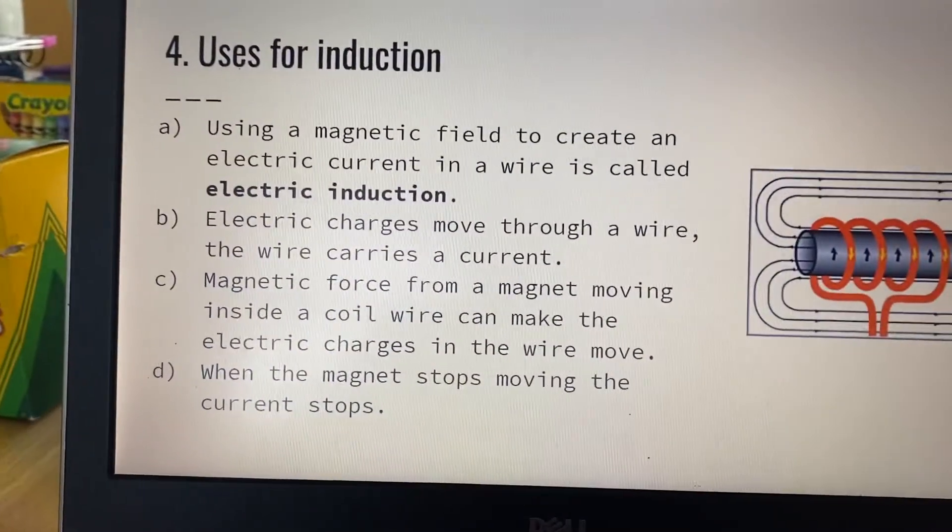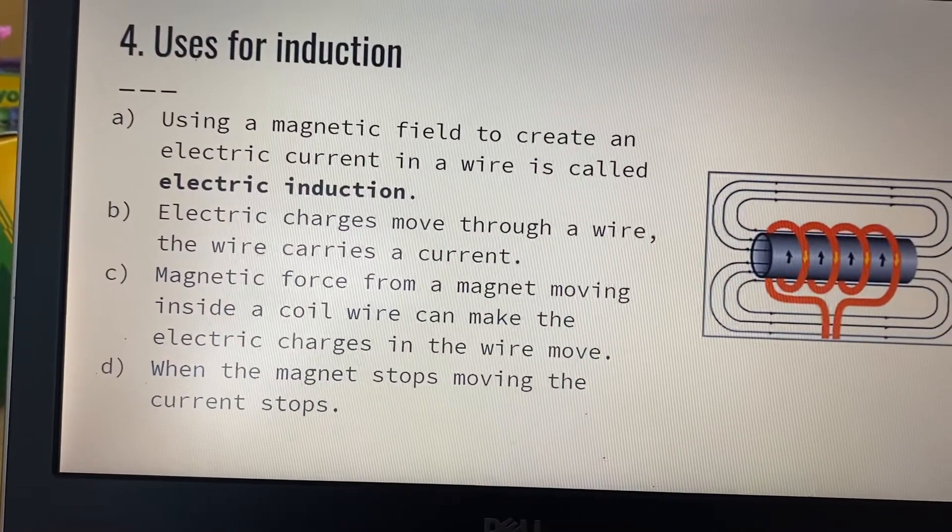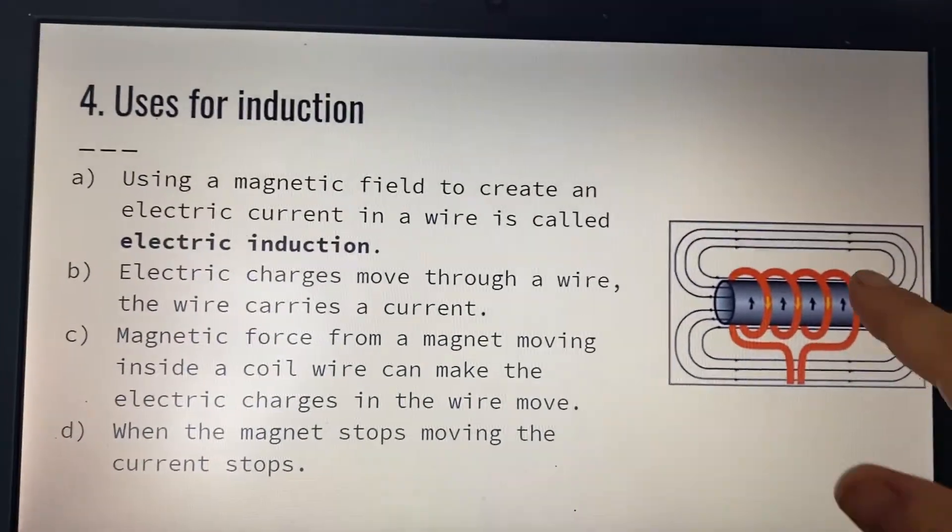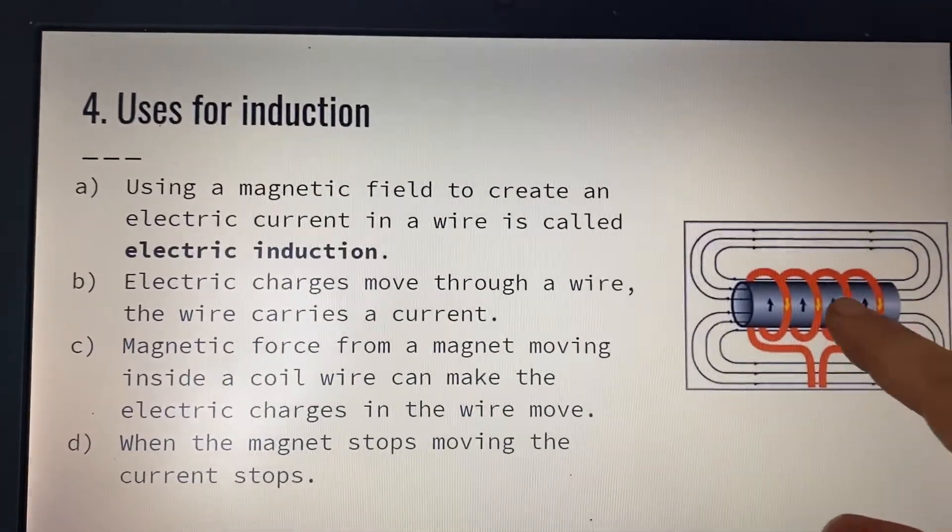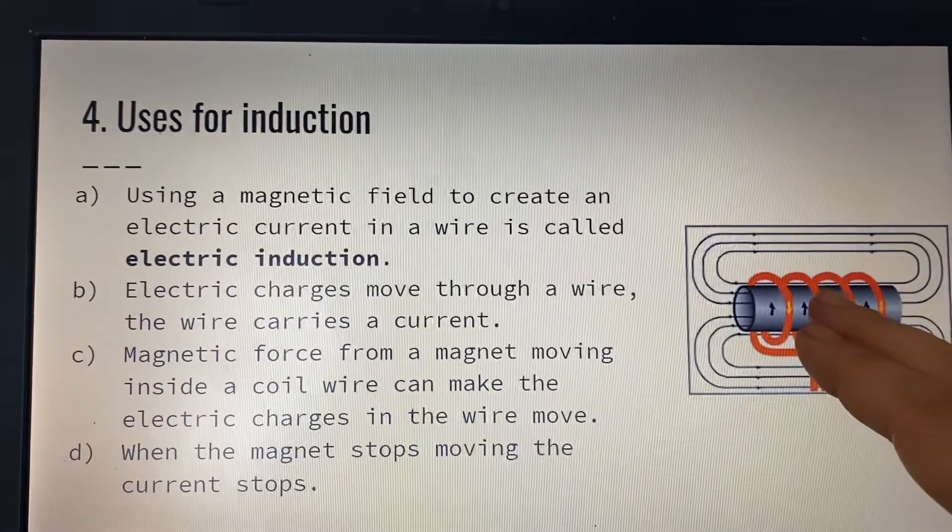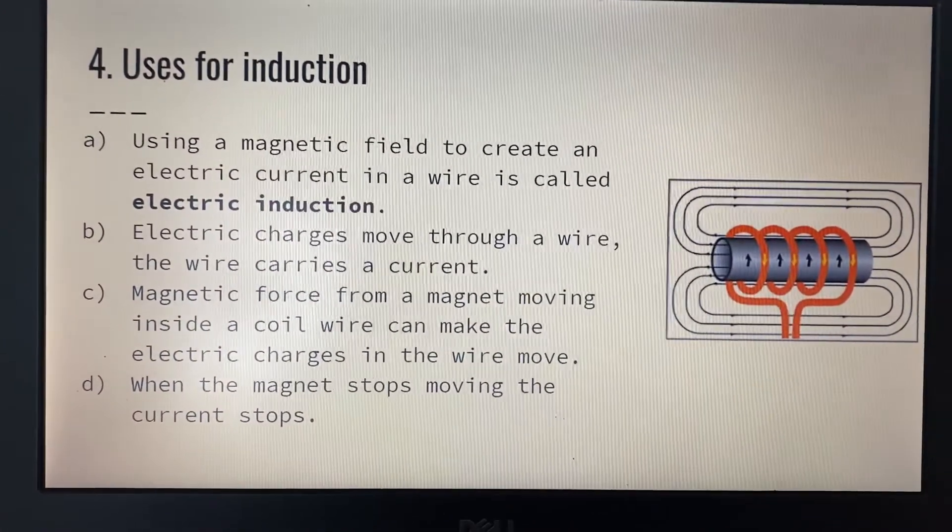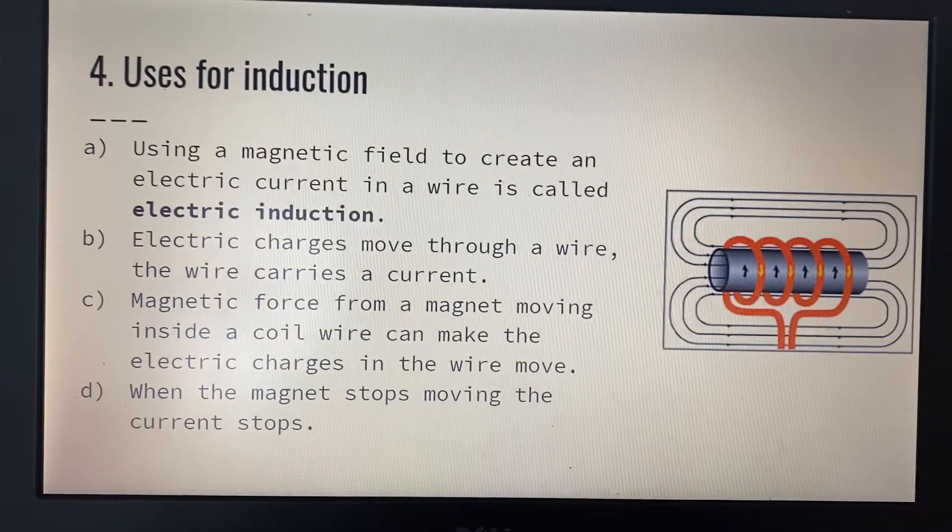Uses for induction. Using a magnetic field to create an electrical current in a wire is called electric induction because you're forcing an electrical current to appear, which wouldn't have been there before. So you're actually inducing or creating the electric field. The electric charge is moved through a wire. The wire carries a current.